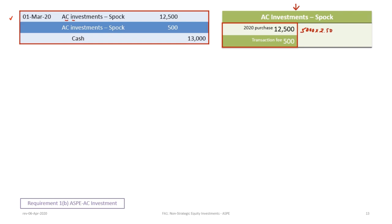Under amortized cost, the transaction fee is also added to the investment account — unlike FVNI where brokerage fees are expensed separately. This treatment is similar to the OCI approach under IFRS. So we debit AC Investments — Spock for $500 for the fee and credit Cash for $13,000.